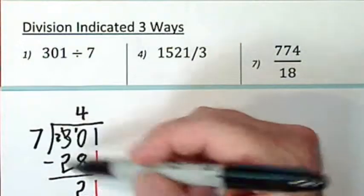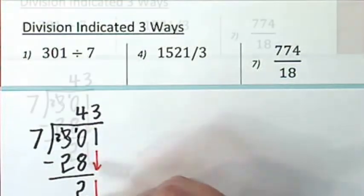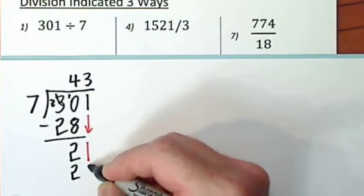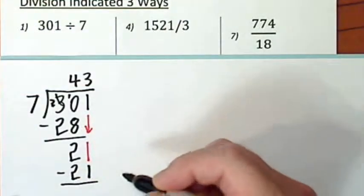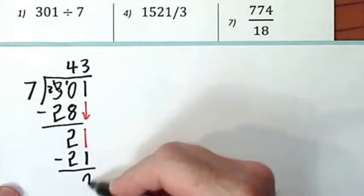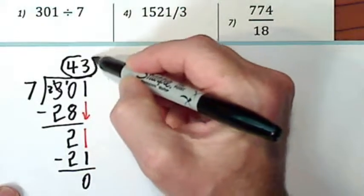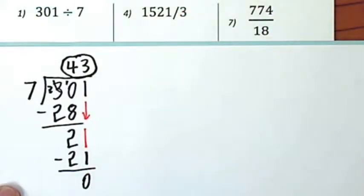Then you repeat the process. Seven goes into twenty-one, three times, and nothing's left over. So three hundred one divided by seven is forty-three.